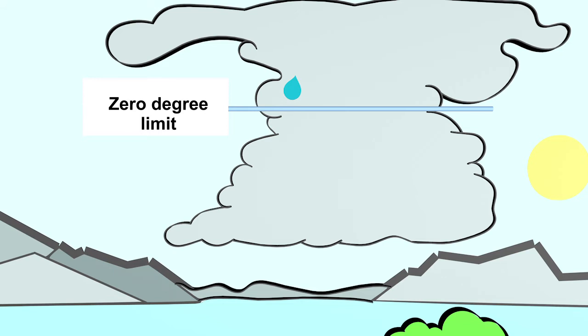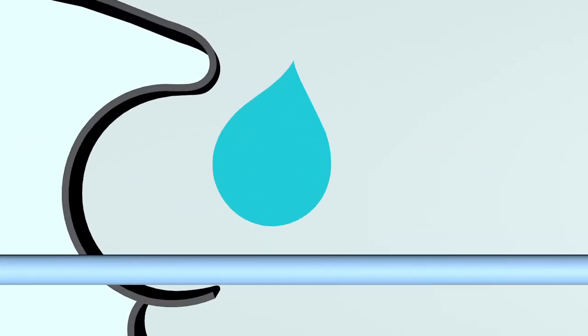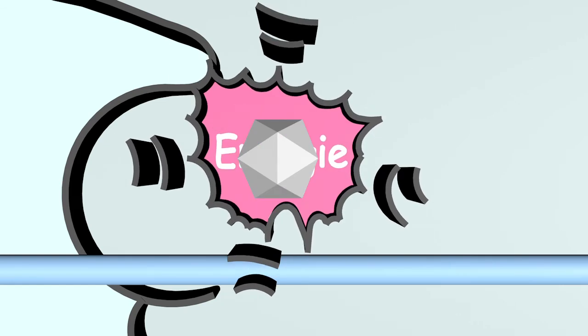Above the zero degree limit, the air has a temperature of below zero degrees Celsius. The water drops turn into small ice crystals. When water turns into ice, energy is released again. This warms the air around the ice crystals and the updraft causes the ice crystals to rise further.